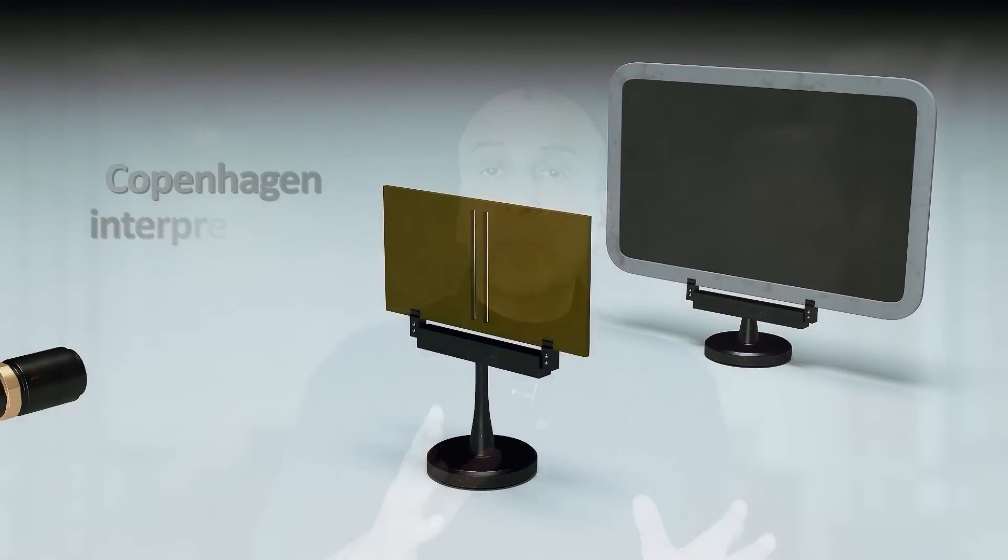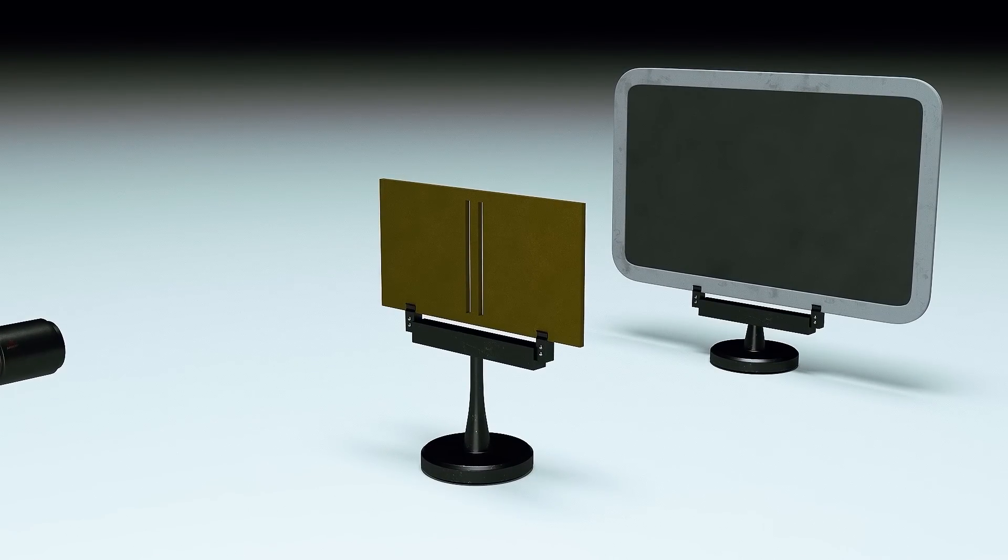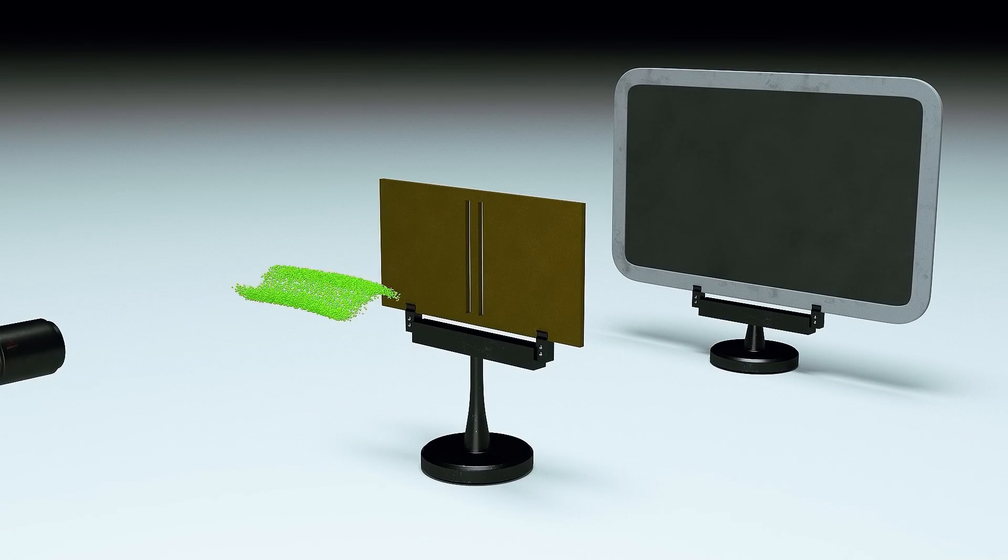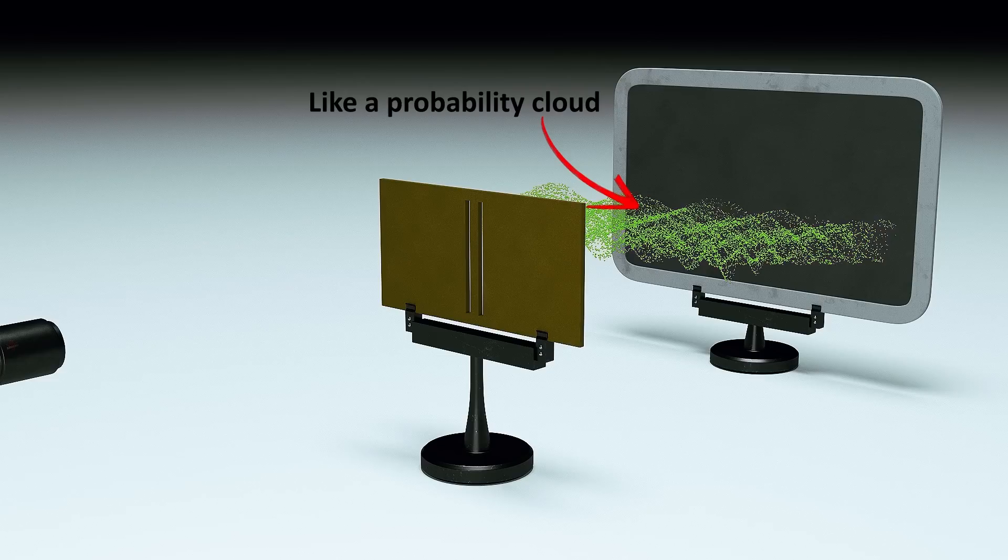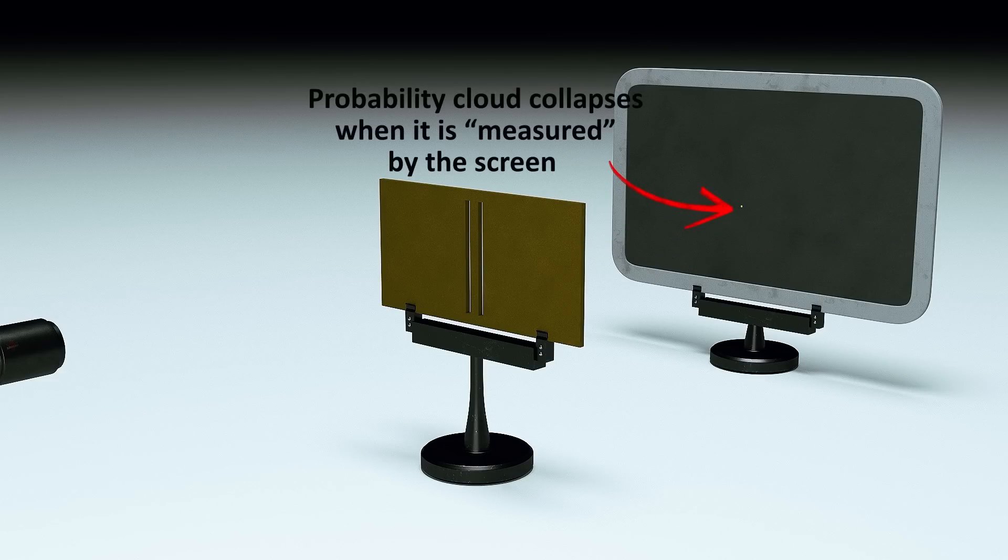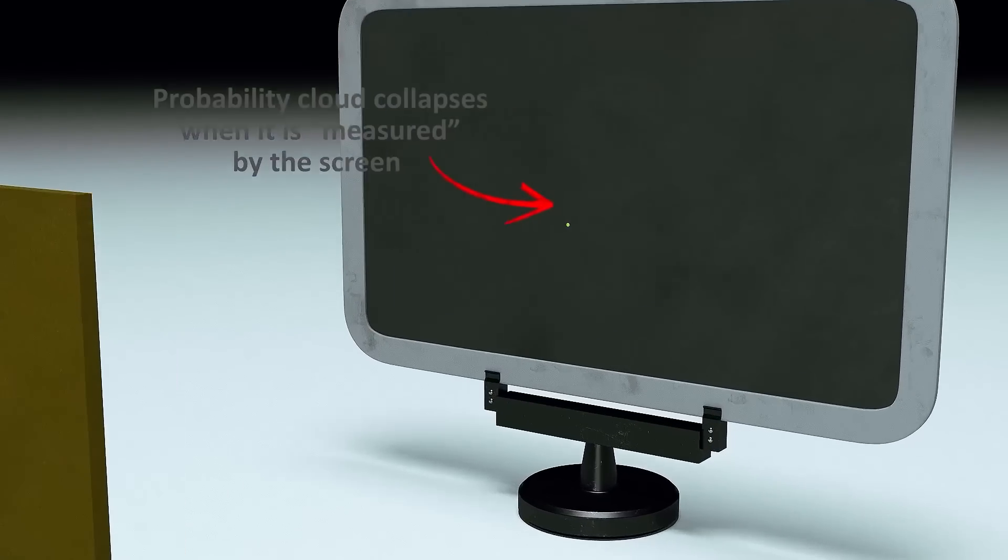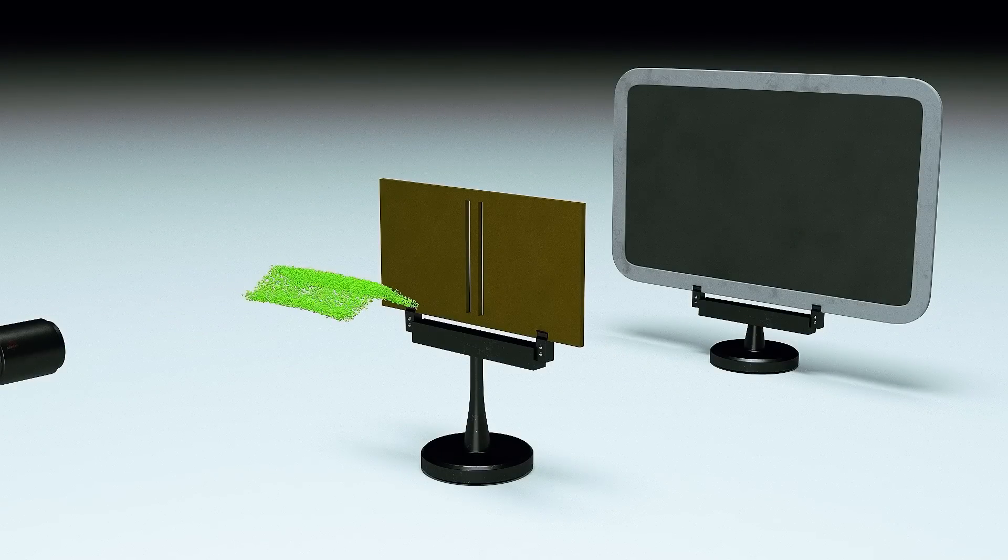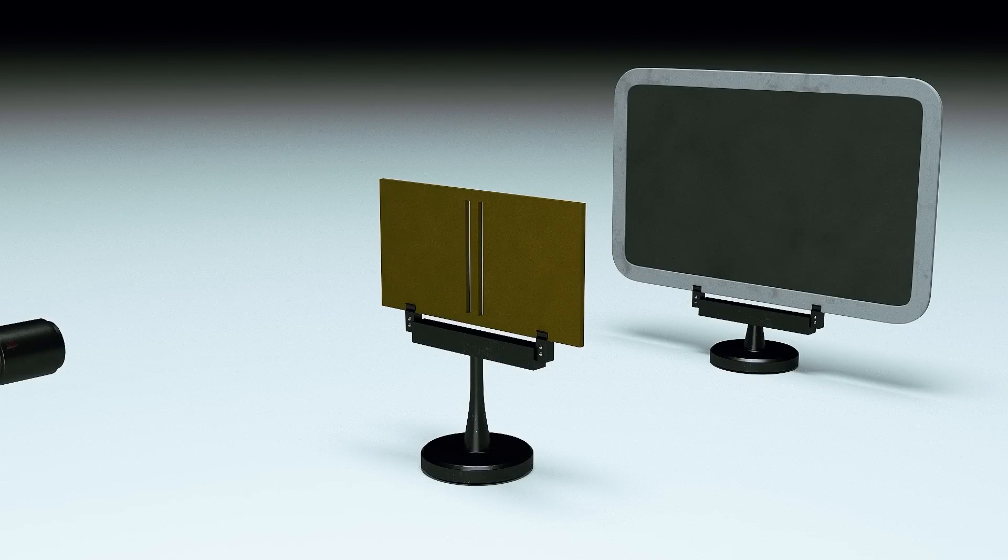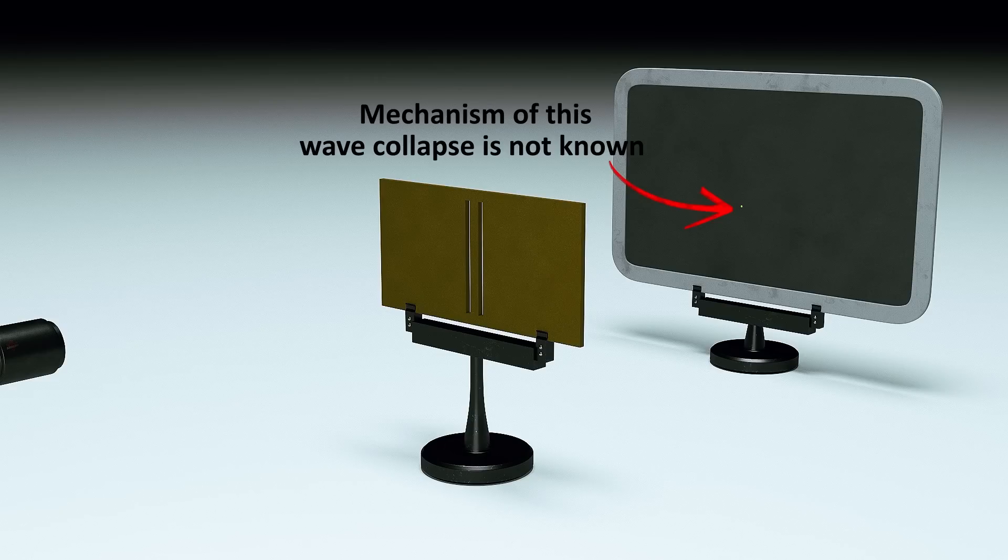It basically says that the universe plays by two sets of rules. Before we measure anything, quantum objects exist in a superposition of various states. Their location is like a probability cloud, all the places they could be. But when the object is measured, the probability cloud collapses, such that we find a particle at a fairly distinct location. The precise mechanism of how the wave collapses is not known. This is called the measurement problem. All we know is we can't predict its location in advance. Thus it is non-deterministic.